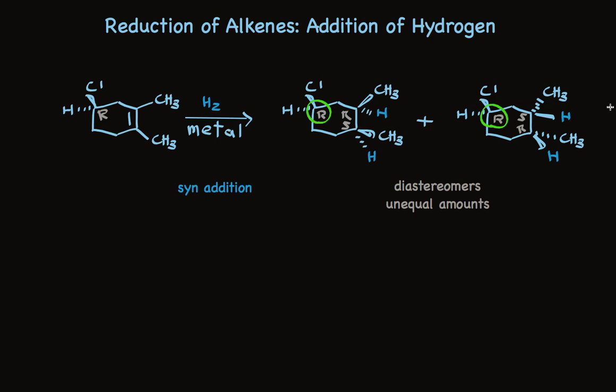It's easy to imagine that this alkene will interact with the surface of the metal preferentially with one side over the other. For instance, in this molecule the chlorine is sticking out above the ring, which we can imagine will sterically interfere with interaction with the metal surface. In any case, without trying to predict which stereoisomer will predominate, we can be confident that we'll make these stereoisomers in unequal amounts. And we can confidently write just these two stereoisomers, because the reduction always proceeds with syn addition.